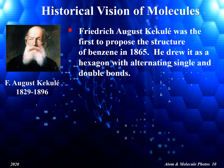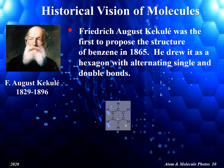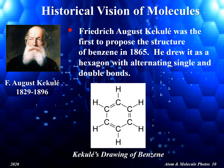Four years later, in 1865, Friedrich August Kekulé was the first to propose the structure of benzene. He drew it as a hexagon with alternating single and double bonds as shown in the diagram. Today, this diagram is known as the Kekulé structure, and is still used to show the benzene ring as it appears in many organic compounds.